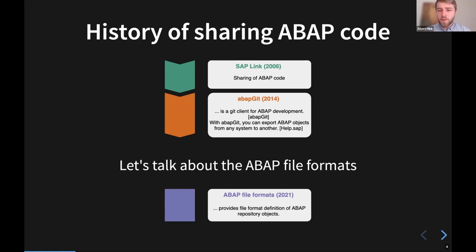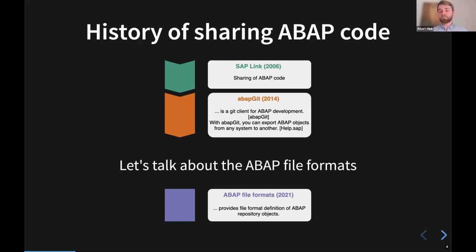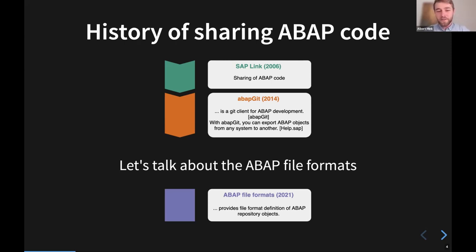Then with the rise of Git, it was just a matter of time before we saw our first Git client in the ABAP world. Around 2014, ABAP Git was launched. ABAP Git describes itself as a Git client for ABAP development written in ABAP. SAP says with ABAP Git you can export ABAP objects from any system to another. If you're familiar with Git clients outside the ABAP world, don't expect everything you know - this client is tailored to ABAP development but at the end it's a Git repository.